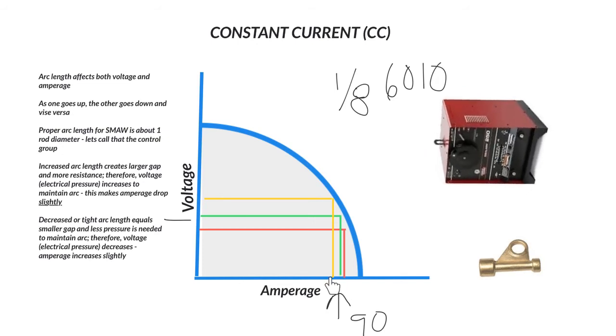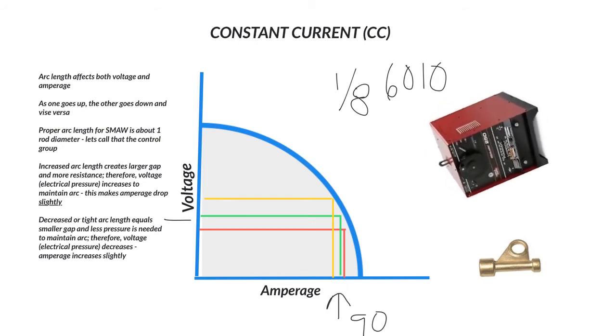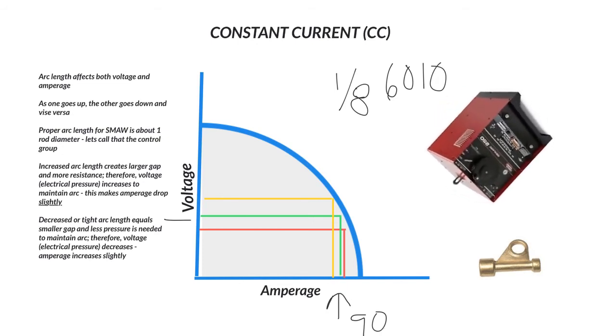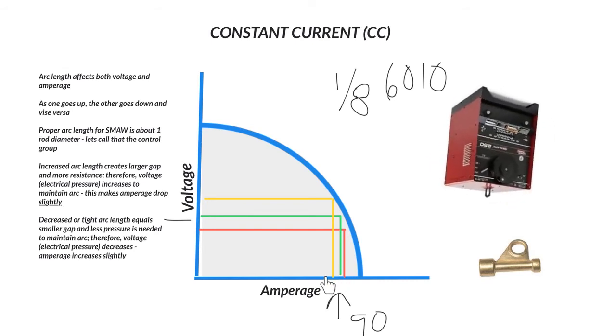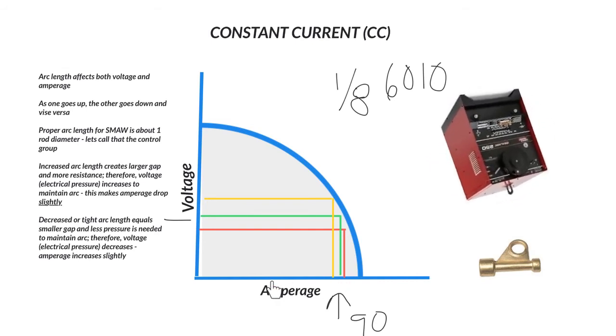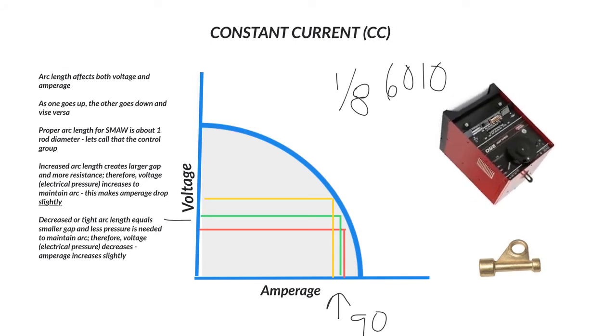But you can see that the drop is very insignificant. If we're at 90, maybe we go to 85, the rod's still going to burn. If it dropped down to like 50, we'd have a problem. We would stick to the metal and we would not be able to weld.